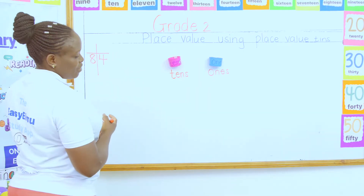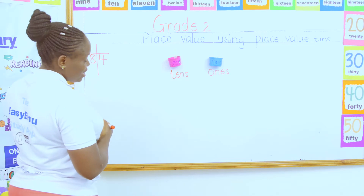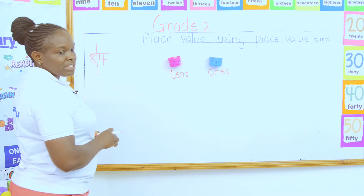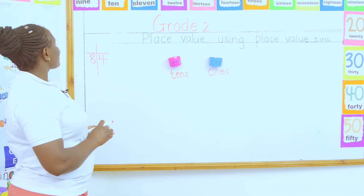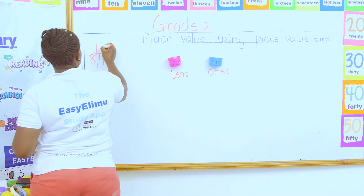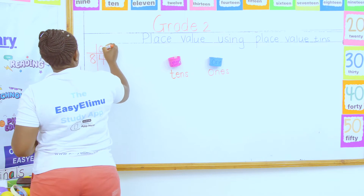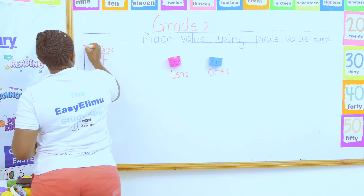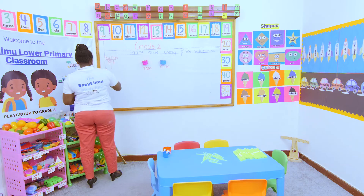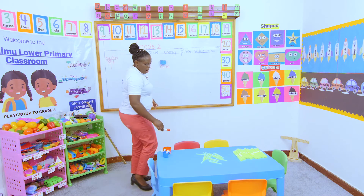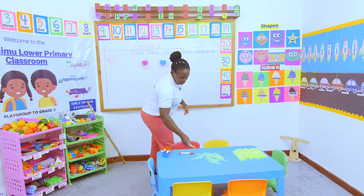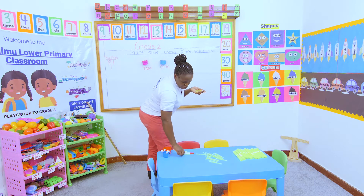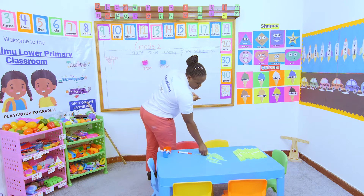First, identify the place value of these different numbers using the place value chart. What is the place value of number four? The place value of number four is ones. What is the place value of number eight? The place value of number eight is tens. So when I want to use the place value tins, I will have my sticks ready.